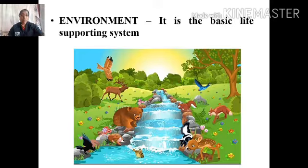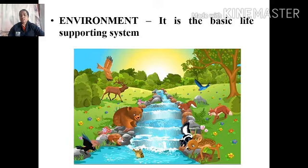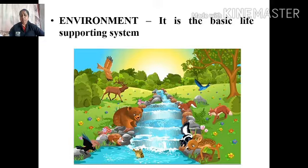Coming to the definition of the word environment: it is the basic life supporting system. The system which needs to support the life on the planet Earth is known as environment. We need a set of conditions to be in place in order to live happily and to survive on this planet. So the conditions which are required to survive on this planet are known as environment.